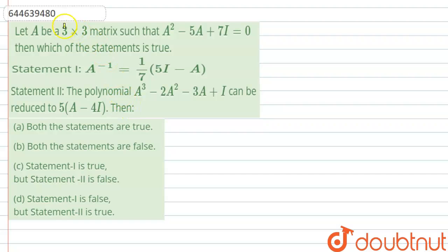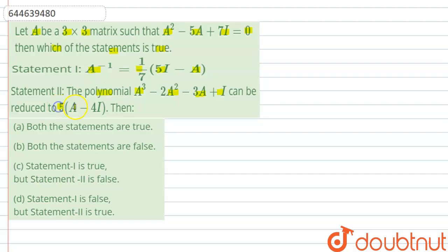Hello everyone, let's start the question. The question says that let A be a 3×3 matrix such that A² minus 5A plus 7I equals 0. Then which of the statements is true? Statement 1: A inverse equals 1/7 times (5I minus A). Statement 2: the polynomial A³ minus 2A² minus 3A plus I can be reduced to 5 times (A minus 4I).